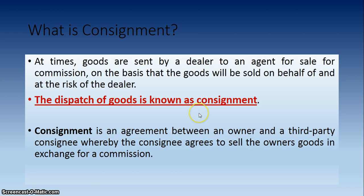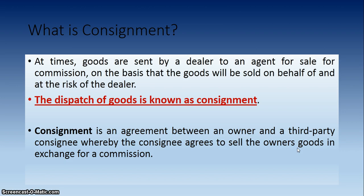The dispatch of goods is known as Consignment. Consignment is an agreement between an owner and a third party — the Consignee — whereby the Consignee agrees to sell the owner's goods in exchange for a commission. Simply put, Consignment ایک ایسا agreement ہے جہاں goods کا owner اپنے goods کسی third party کو دیتا ہے، اور وہ person owner کے behalf پر market میں goods کو sale کرے گا۔ اس کے بدلے میں third party کو owner سے commission ملے گا۔